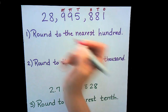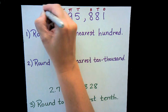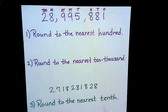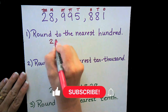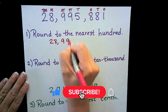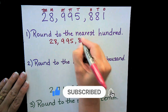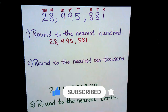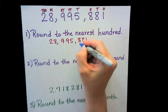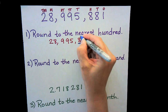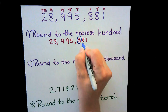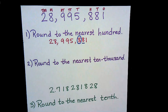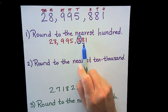When we know we want to round to the hundreds, we're going to take this number and circle the place value we want to round to — the hundreds place. So I'm going to circle the digit in the hundreds place, and I'm also going to underline the digit just to the right.